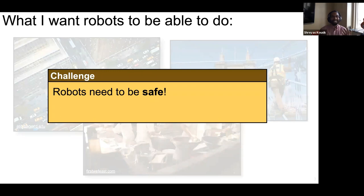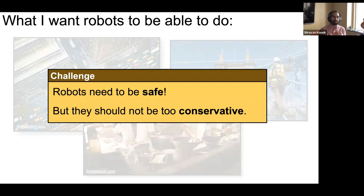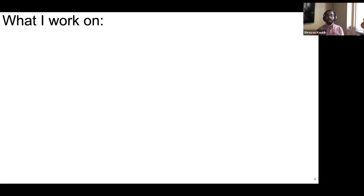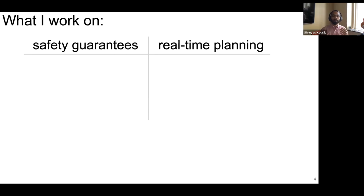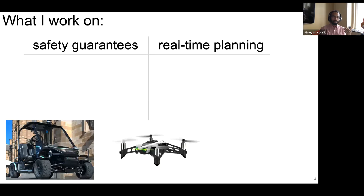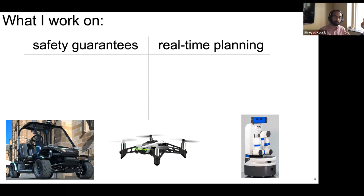One way to stay safe is what we're all doing, which is to stay home — but that can be quite conservative, and we want our robots to actually be able to go out and accomplish tasks. So the trick is to balance safety and conservatism. I've approached this with essentially two halves of my work: one is enforcing safety guarantees, and the other is enabling real-time trajectory planning. I've done this on a variety of robots such as wheeled robots, a quadrotor drone, and most recently a robotic manipulator — the Fetch platform.